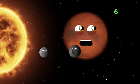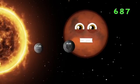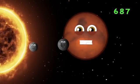687 is the amount of days it takes to orbit the sun for my year to take place.